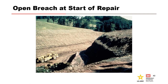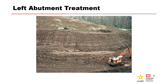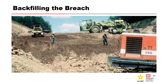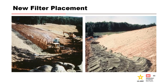A photo shows the breach area prior to repair. Weathered rock was removed from the steep left abutment and the slope was flattened. Grouting was performed from the surface of the dam to fill the coarse filter on the downstream side of the cutoff trench. The breach was then backfilled and properly compacted. Finally, the downstream section of the dam was cut back to a 1.5 horizontal to 1 vertical slope, and a new embankment filter drain was installed the full length of the dam.